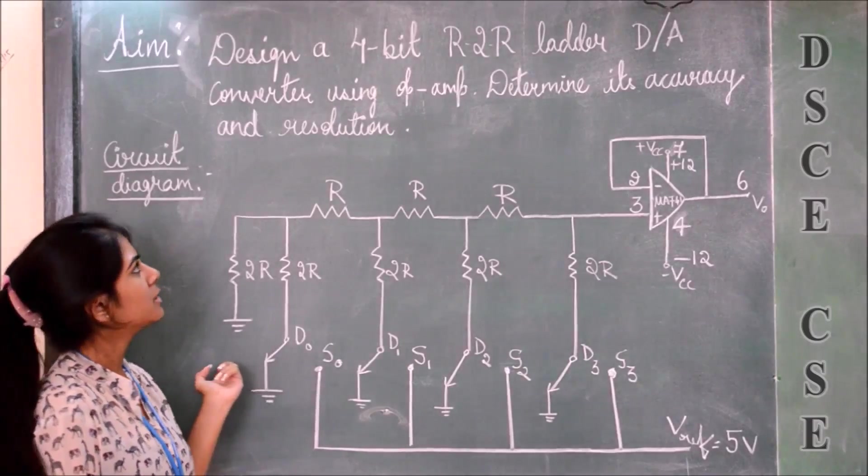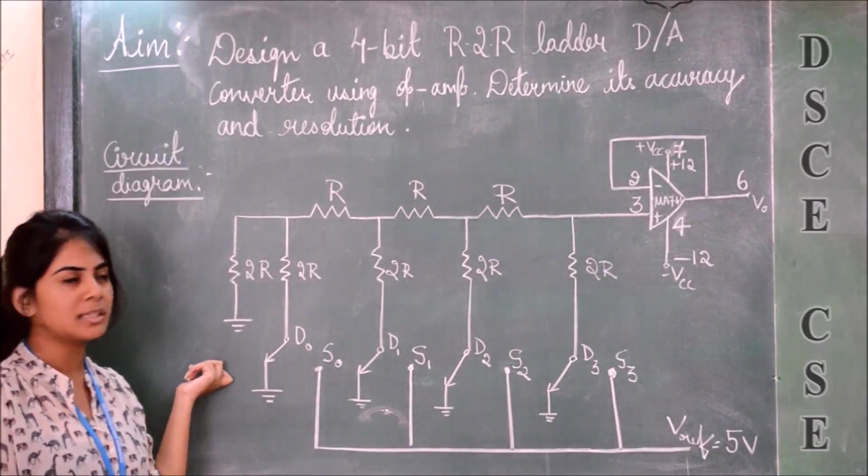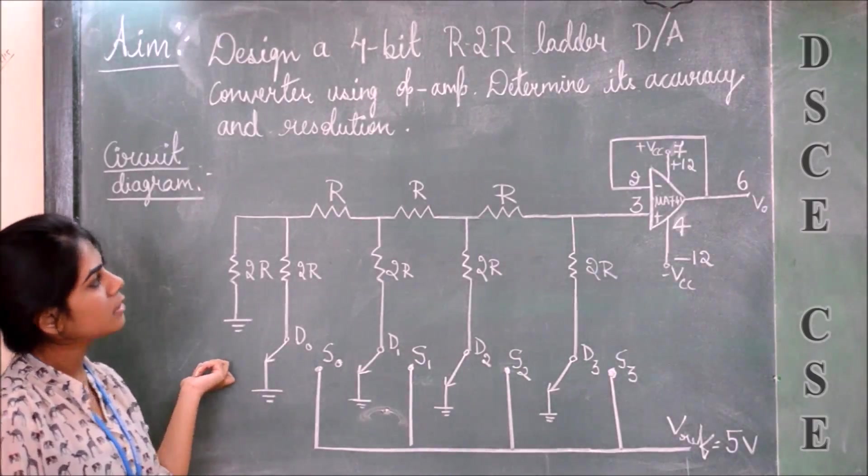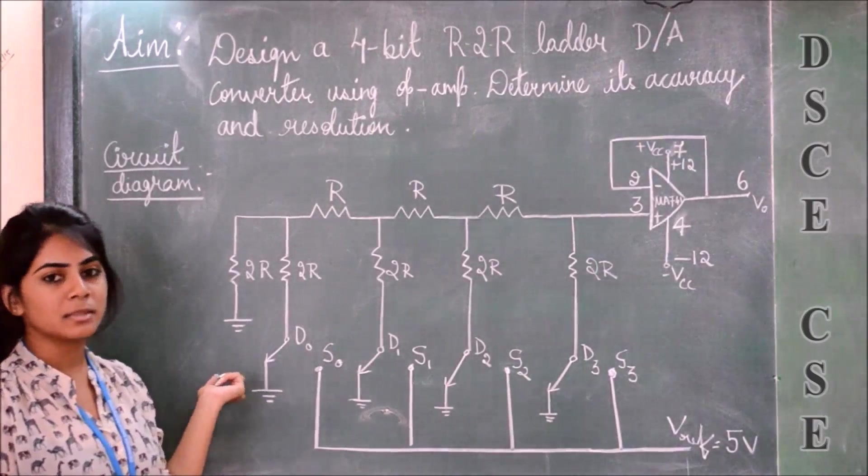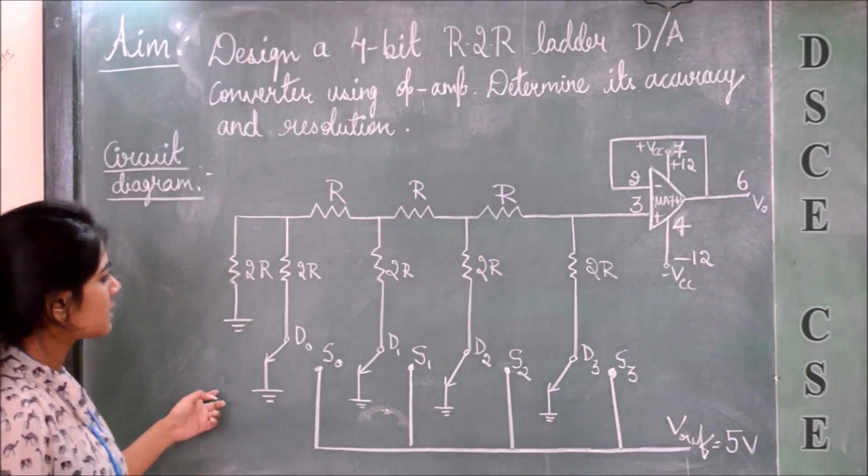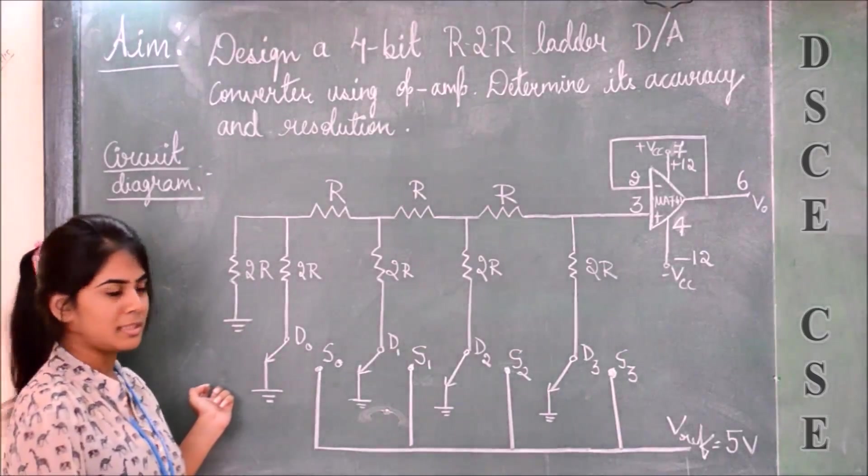The main aim of this experiment is to design a 4-bit R-2R ladder digital-to-analog converter using op-amp and determine its accuracy and resolution. This is the circuit diagram of the R-2R ladder.